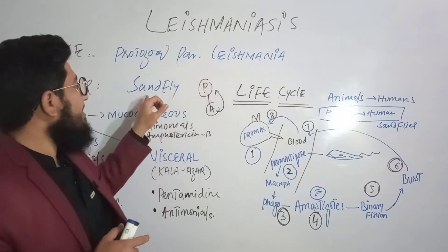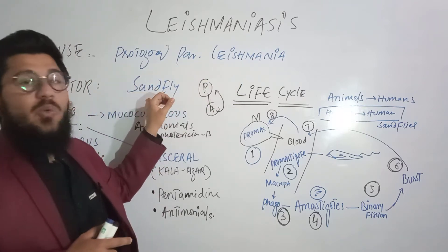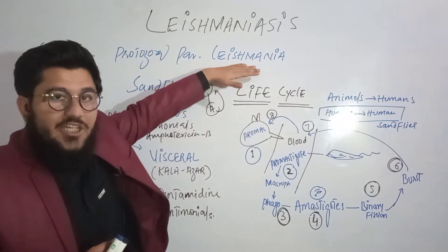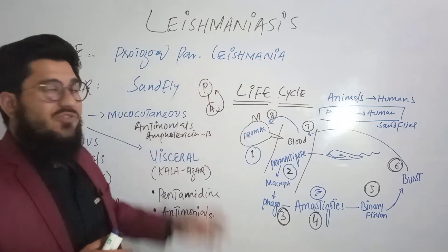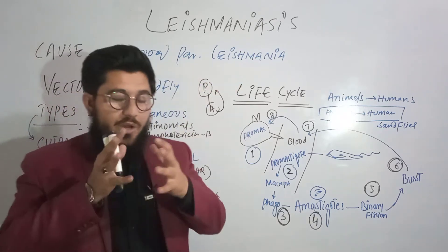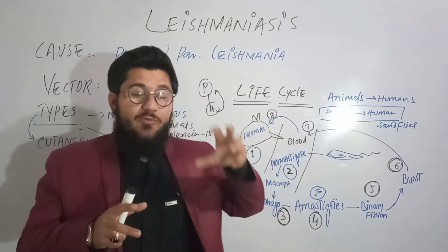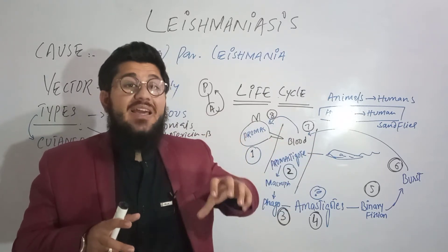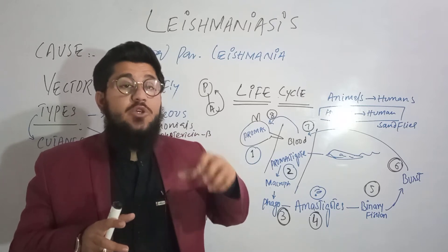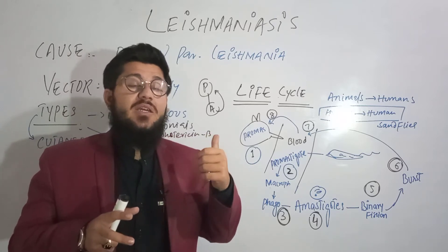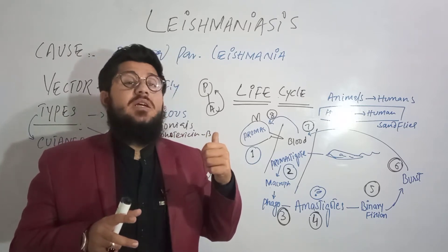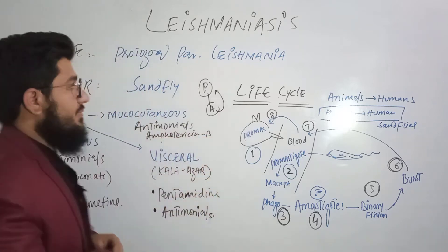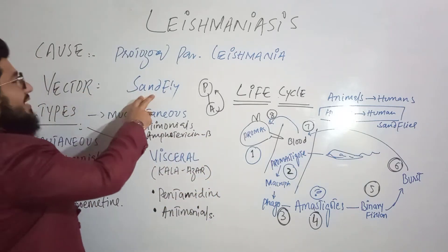The Leishmania will sit in the sand fly, and this sand fly will help in the transport of the Leishmania parasite from one human to another human. So this parasite is moved from one human to another by means of the sand fly. This sand fly is the car being used by the Leishmania parasite, and biologically this car is named the vector. So the vector is the sand fly.